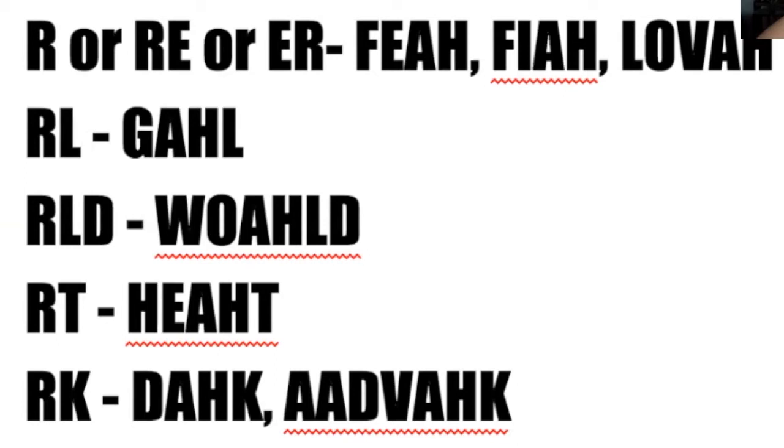Fear, fire, lover, gull, world, hot, dark, aardvark. That's the space we need in order to sing these words. For example, 'this girl is on fire' — it's gonna get stuck here. Go to the extreme first. It's always easier to take a little bit away than it is to try to give more when you've never practiced giving that much to begin with. Try taking the R's out of some of those words and it might open up your sound a little bit.